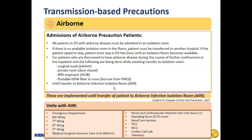All patients in the emergency department with airborne diseases must be admitted in isolation rooms. If there is no available isolation room on the floors, the patient must be transferred to another hospital. If the patient opts to stay, the patient must stay in the ED HAT zone until an isolation room becomes available.